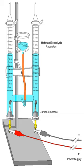The key process of electrolysis is the interchange of atoms and ions by the removal or addition of electrons from the external circuit. The desired products of electrolysis are often in a different physical state from the electrolyte and can be removed by some physical processes. For example, in the electrolysis of brine to produce hydrogen and chlorine, the products are gaseous.